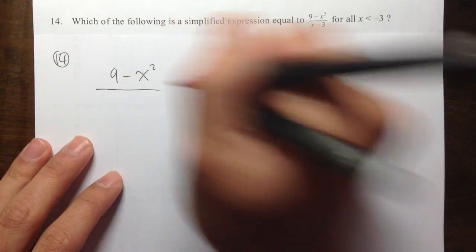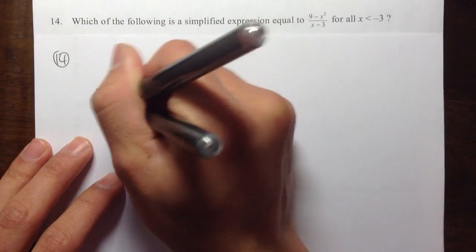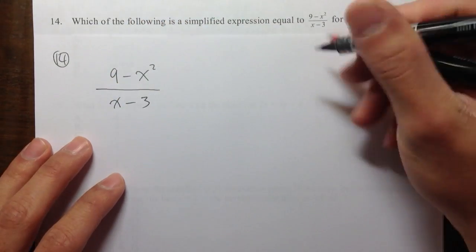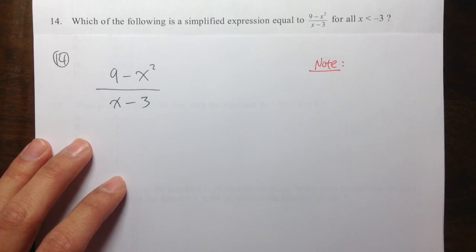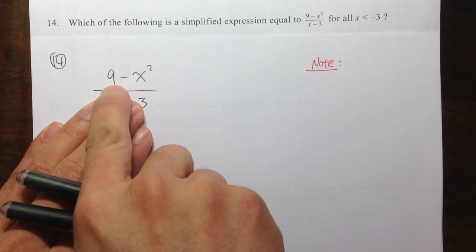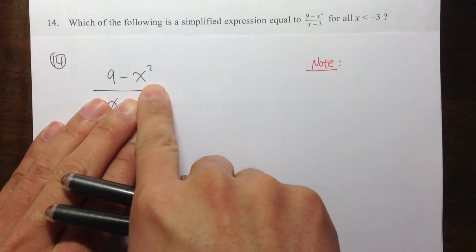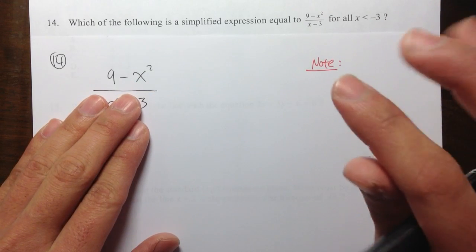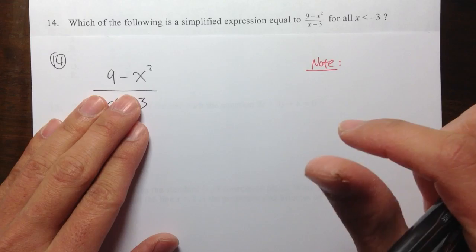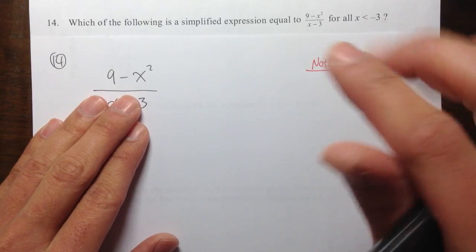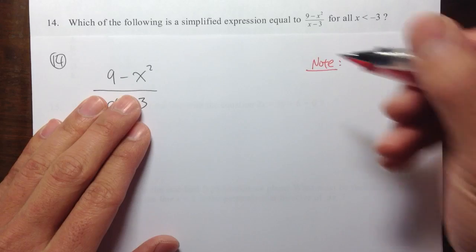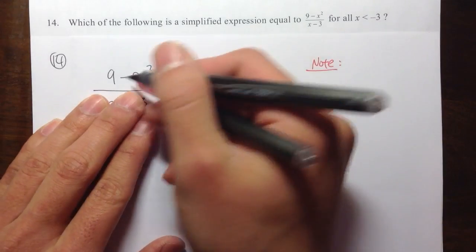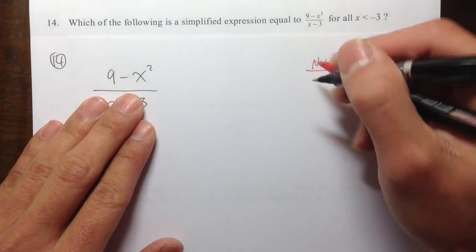9 minus x squared over x minus 3. So I want to put some notes on the side. The first thing is, notice the top. I have 9 minus x squared, and isn't it the case that we always like to have the x in the front and then the number in the back? Sometimes when things are out of order, just like this...